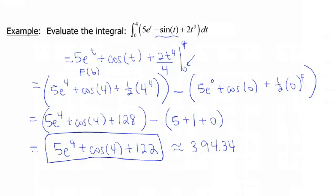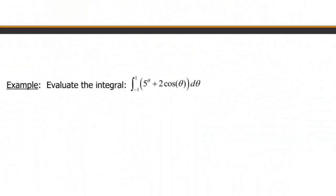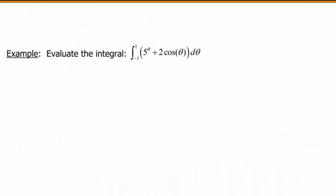Okay, next one. Let's see what other loveliness we have here. Evaluate the integral from negative 1 to 1 of 5 to the theta power plus 2 cosine of theta d theta. So again, remember, this thing here on the back just tells us the variable we're gonna be using. That's the variable we're gonna be integrating in terms of. So all of our functions then should be in terms of theta.